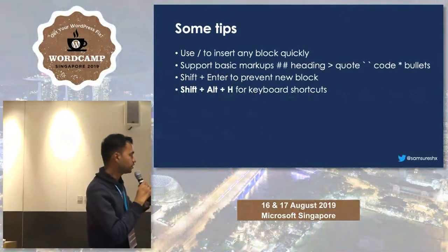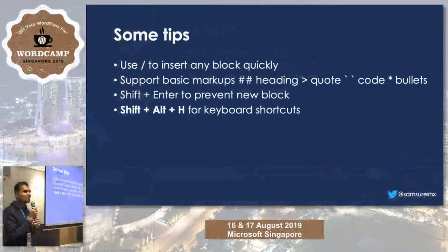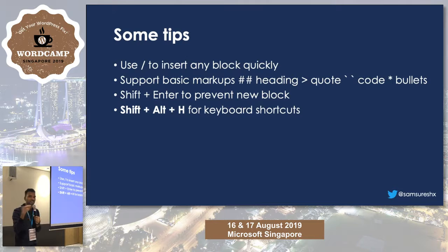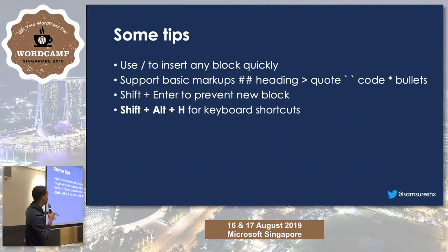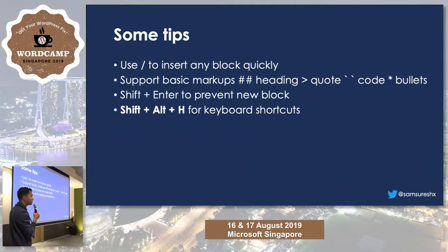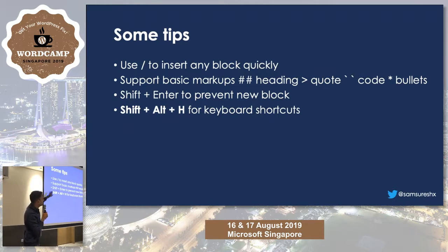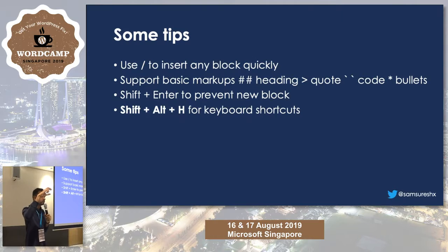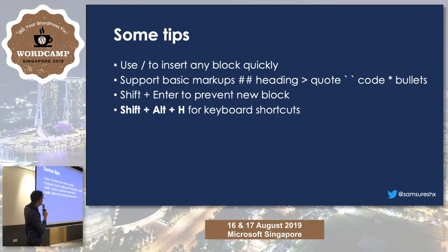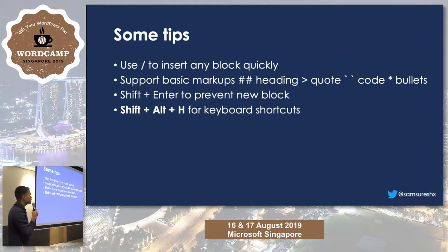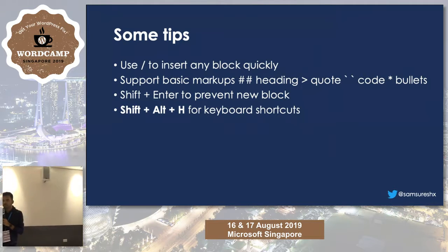Some extra tips for using Gutenberg: you can use a slash to insert blocks — you don't need to press the plus button. Just type slash and the block name, for example 'Twitter', and it comes up. Gutenberg also supports markdown shortcuts: double hashtag creates a heading, and you can use shortcuts for quotes and bullet lists using a star. You can use Shift+Enter so you don't create a new block but stay in the same block. Shift+Alt+H shows you all keyboard shortcuts available in Gutenberg, similar to shortcuts we have in classic editor.